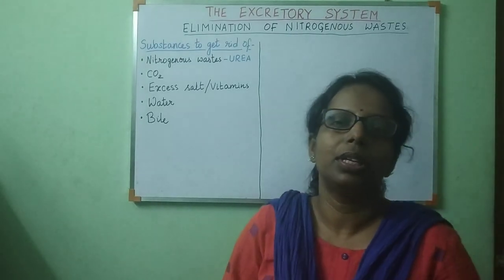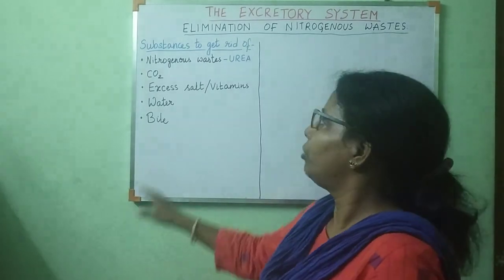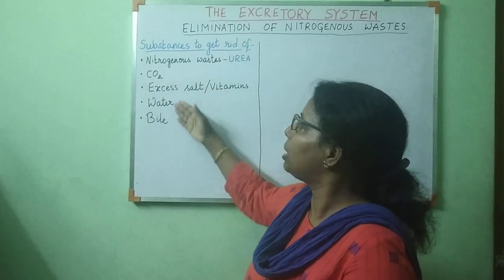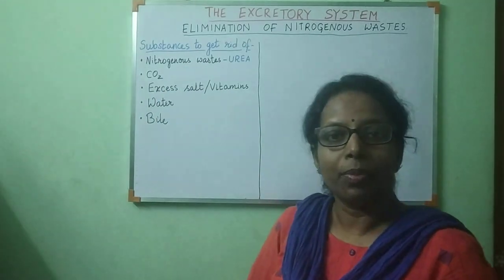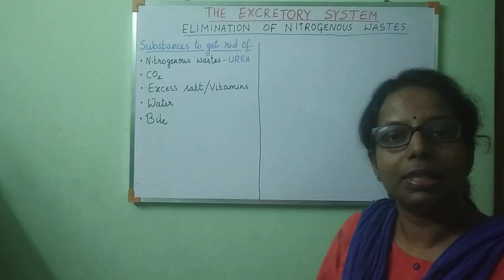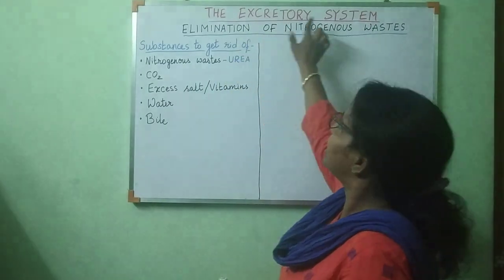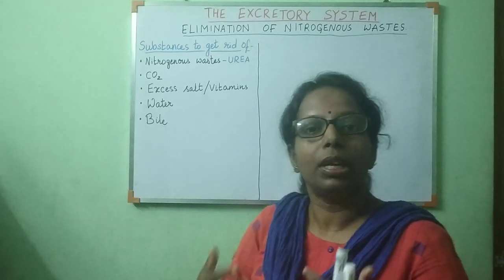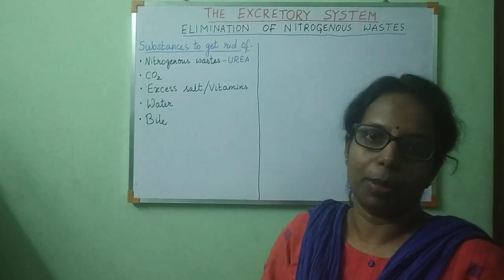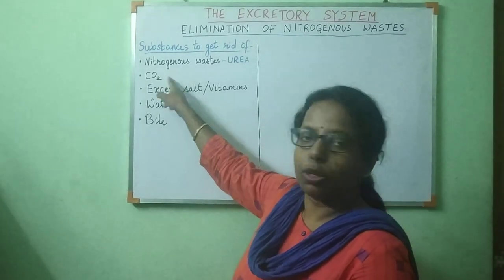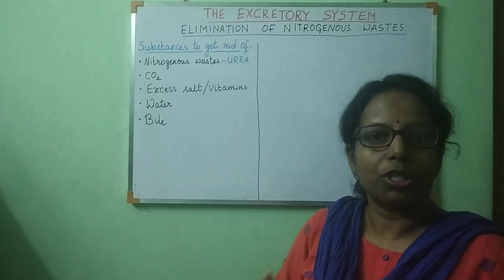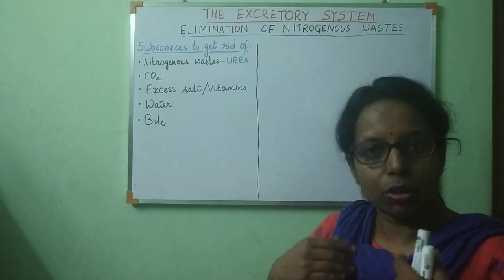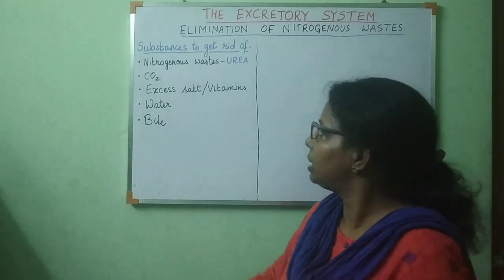In the chapter on the excretory system, even though we excrete many waste materials from our body, this system is actively involved in removing the nitrogenous wastes. CO2 is removed by the respiratory system — the CO2 produced in the cells during respiration is given out as a waste product through our respiratory system.